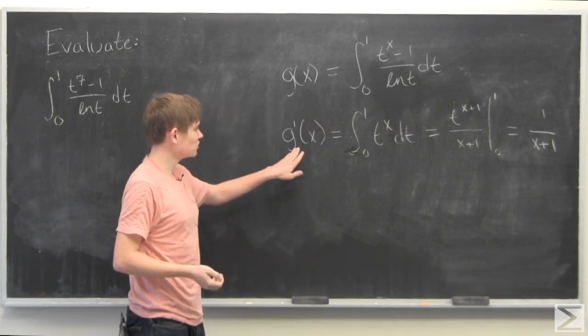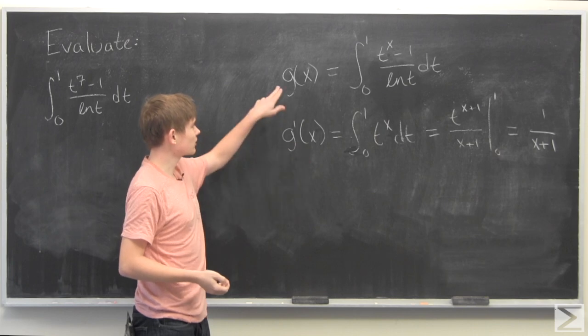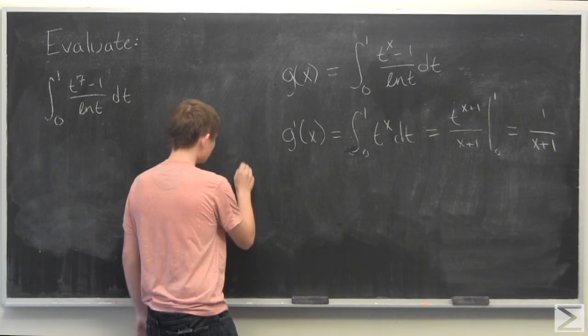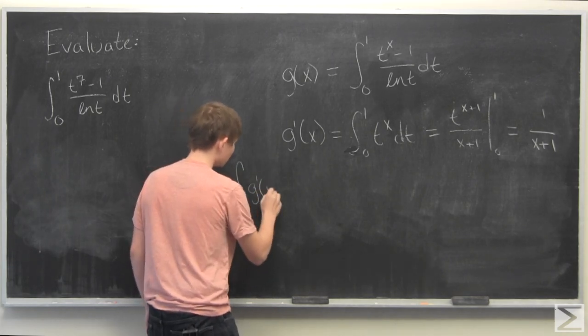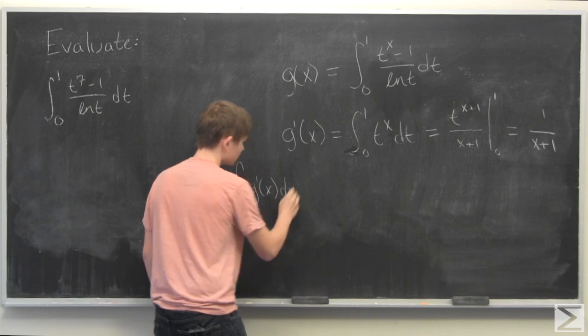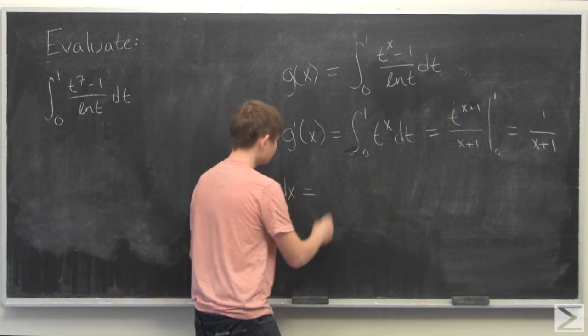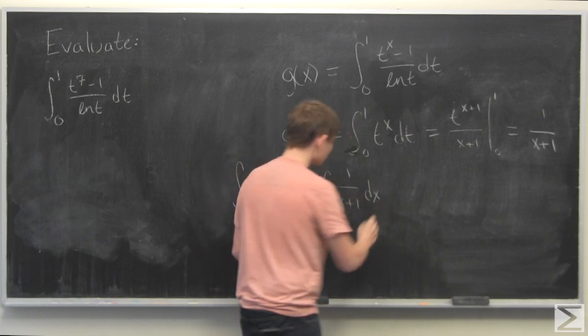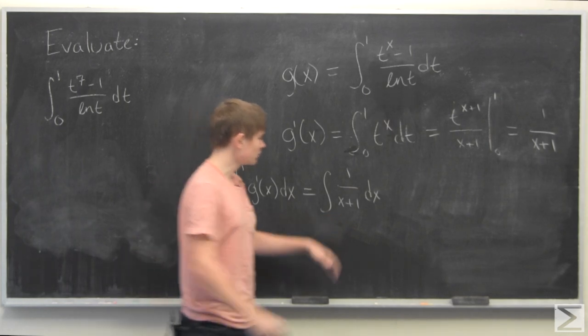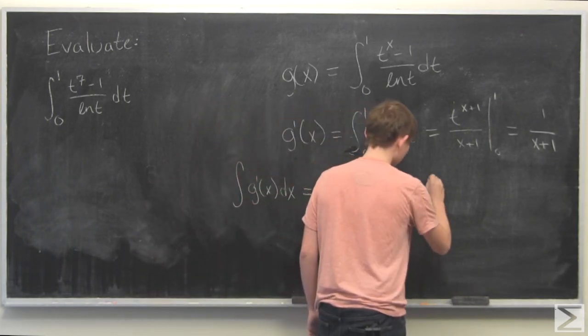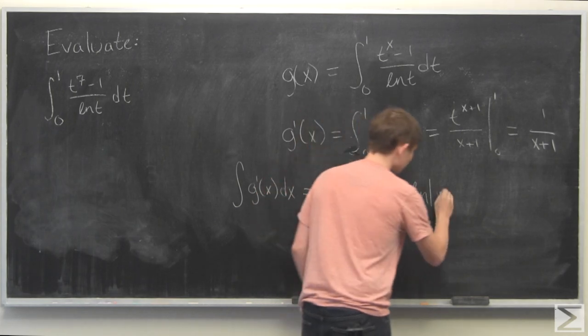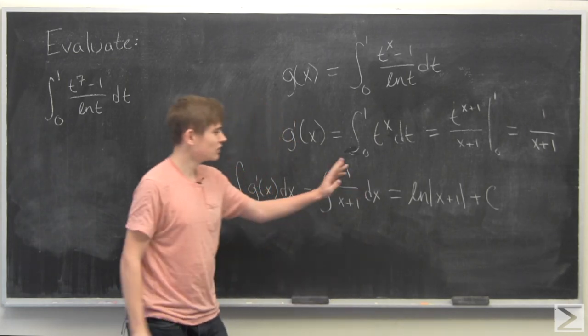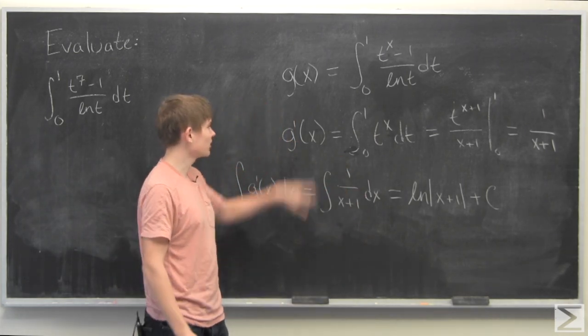So we have g prime of x. Now we need to get back to g of x, so we have to find the antiderivative. If we integrate g prime of x with respect to x, this is just the integral of 1 over x plus 1. This is a pretty easy integral to do. It's just the natural log of the absolute value of x plus 1 plus a constant.